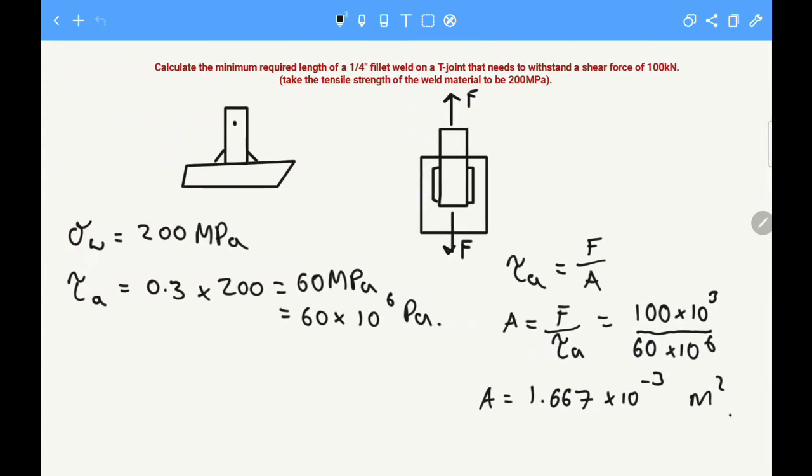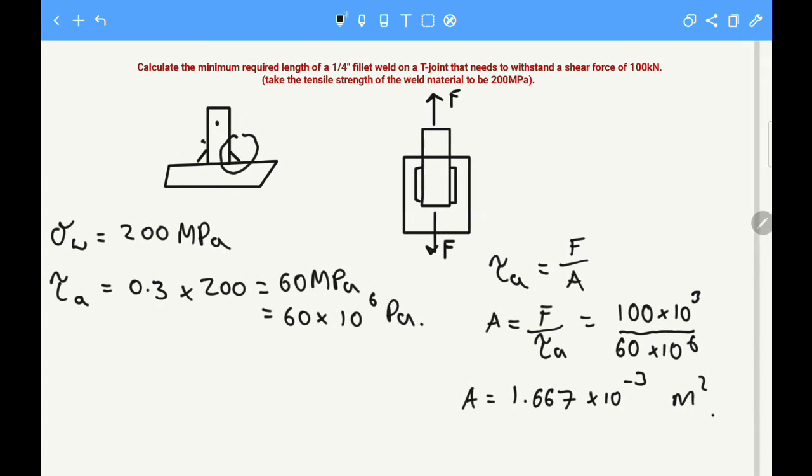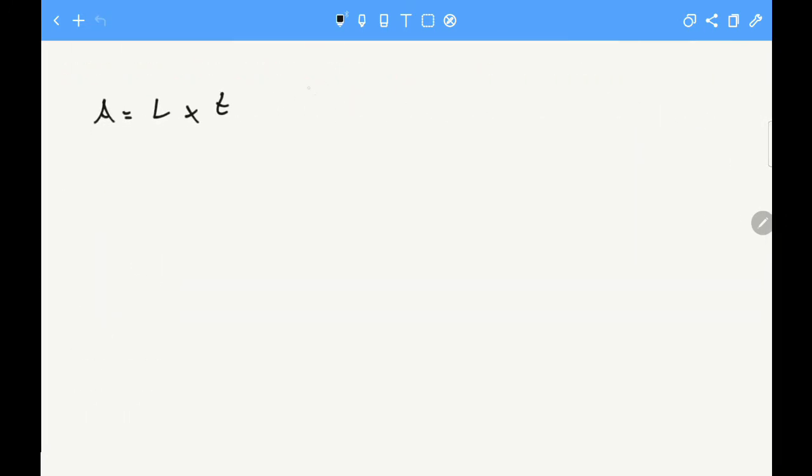If we look at this in more detail, that's the beam, that's the base material, and you've got your weld here. The throat thickness of the weld is this length here, and we'll label that as t.